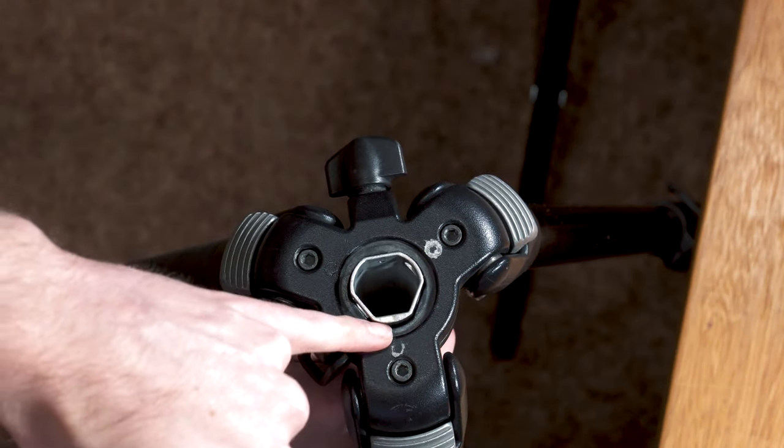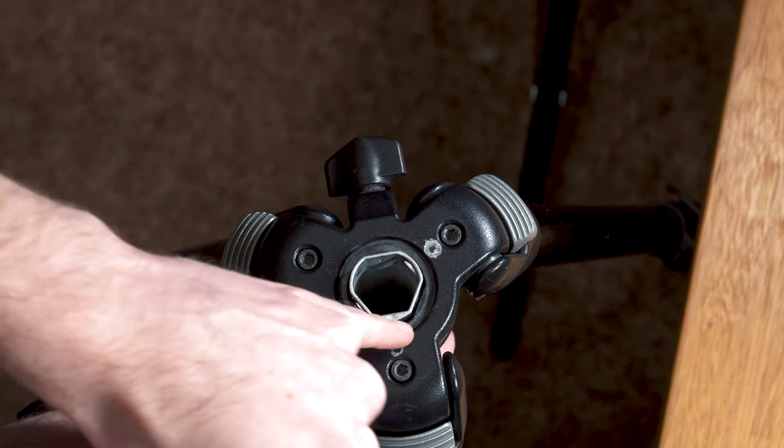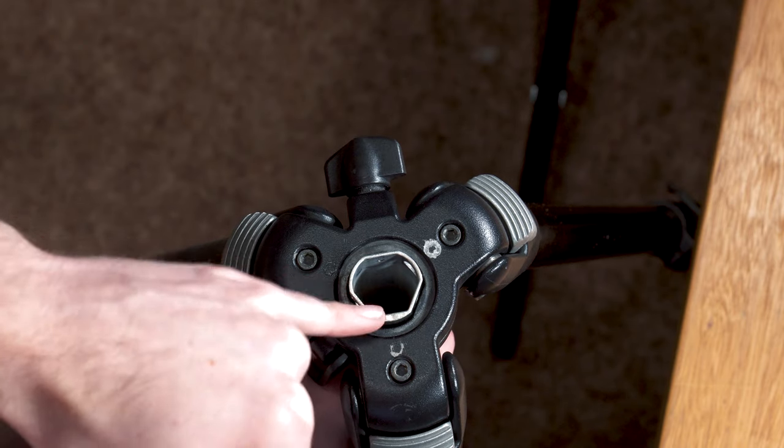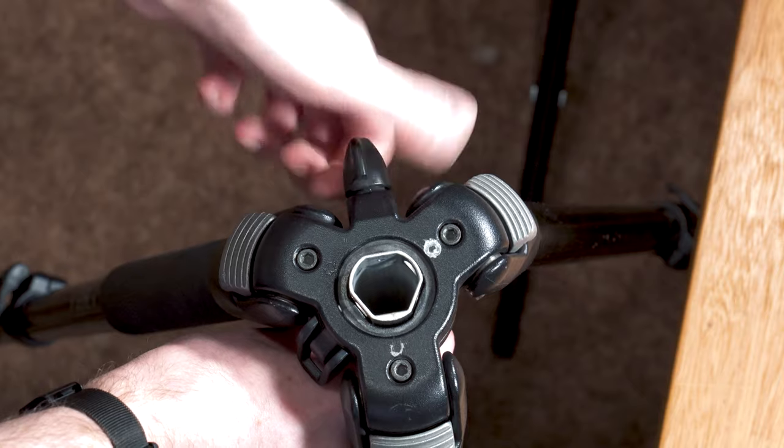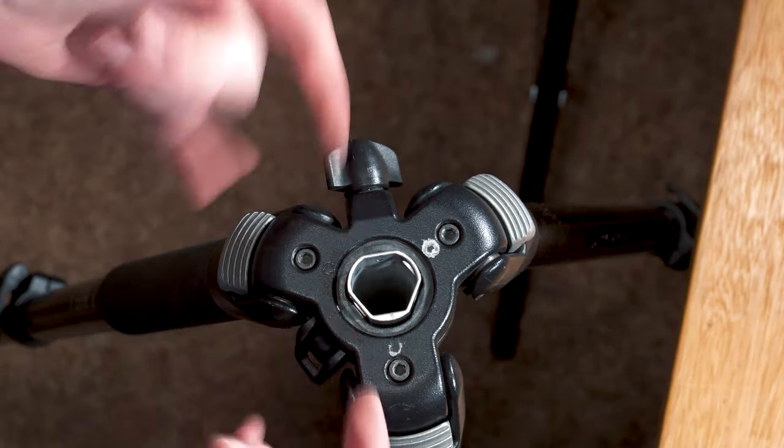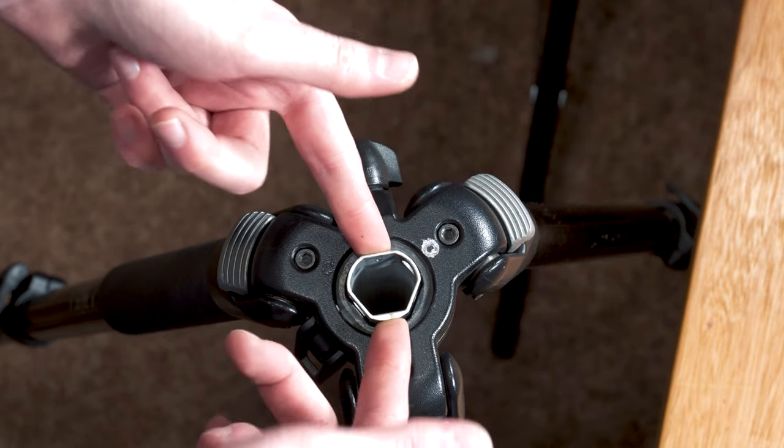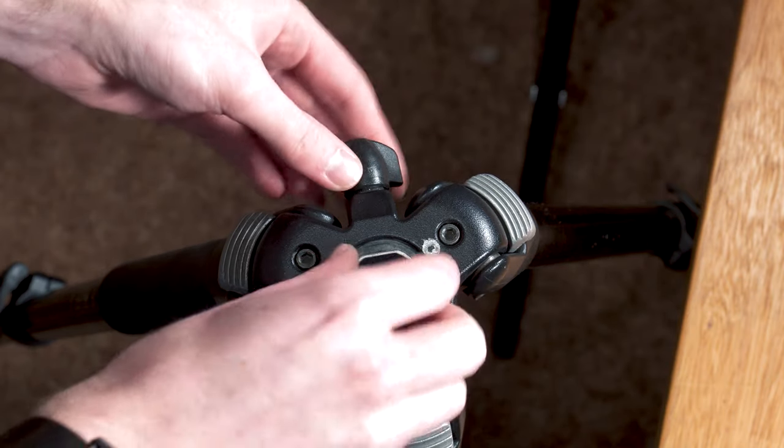One thing to note when you're putting these in either right side up or upside down: there's a section on one of the rounded sides that is thicker, and that needs to be opposite your clamping knob here. That is because this is stronger. It's intended to go like this so that the clamping load on it doesn't bend the tube. You'll see if you have it the wrong way, you'll get nicks down the rounded side of the tube there.